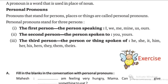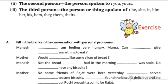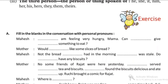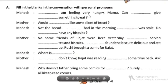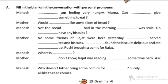Second person refers to the person spoken to, like you, yours. And the third person refers to the person or thing spoken of, like he, she, it, him. These are the personal pronouns. For example: I am feeling very hungry. Can you give me something to eat? These are personal pronouns used in conversation.